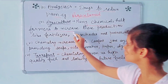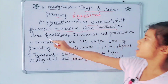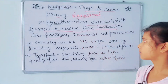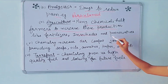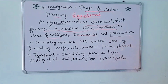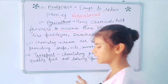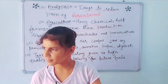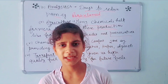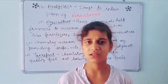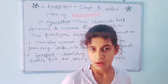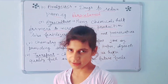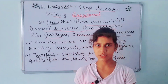Chemistry also helps in agriculture. Many chemicals help farmers to increase their production, like fertilizers, insecticides, and preservatives. Farmers use many chemicals to remove weeds from fields and to remove microorganisms which harm their crops.